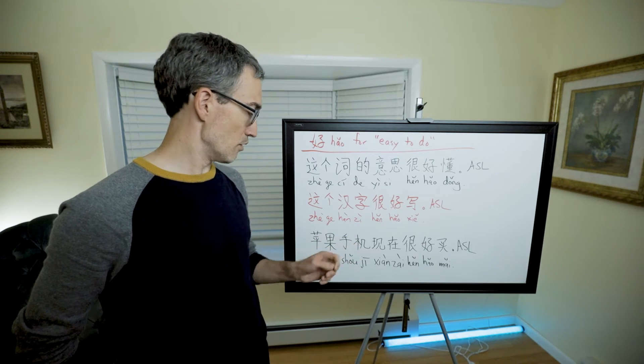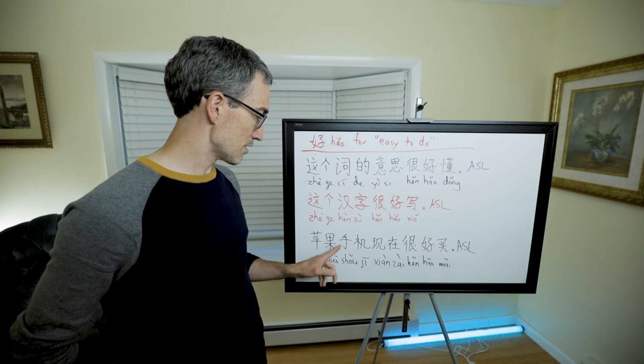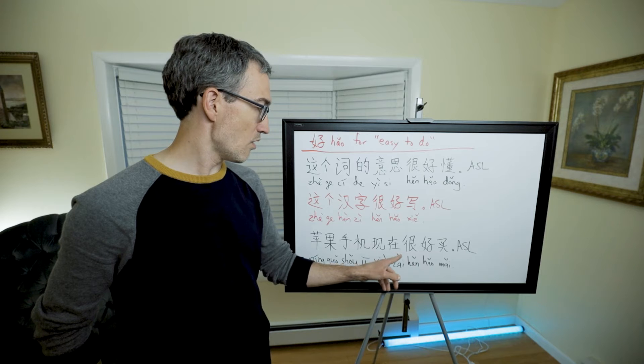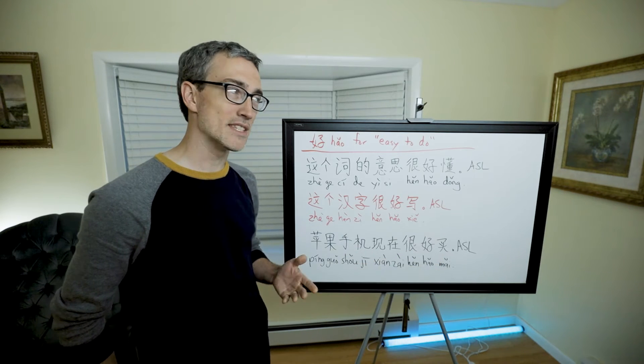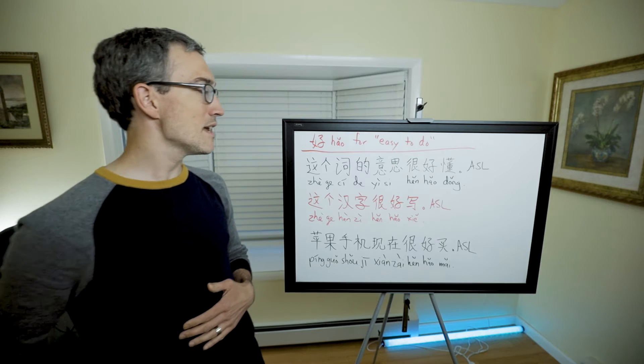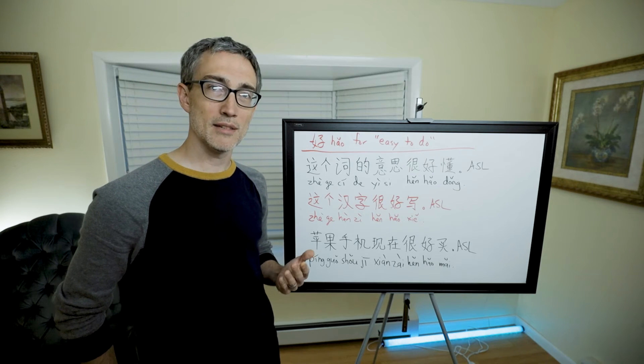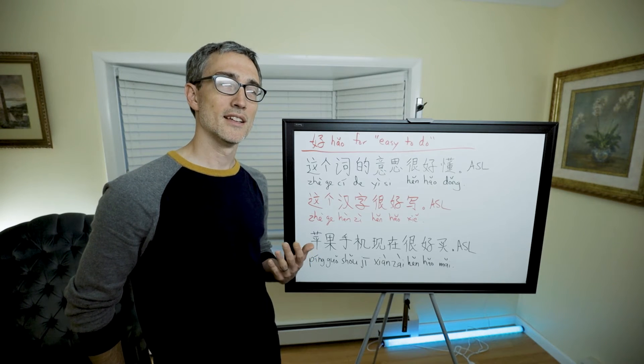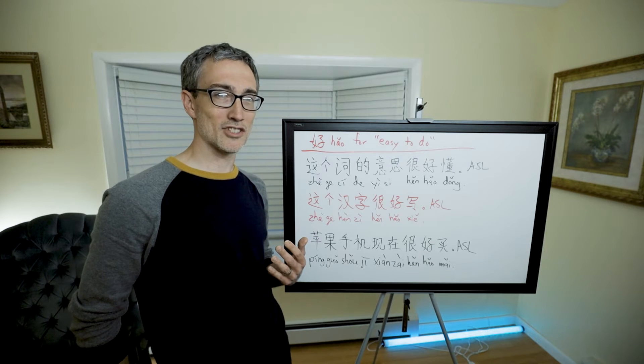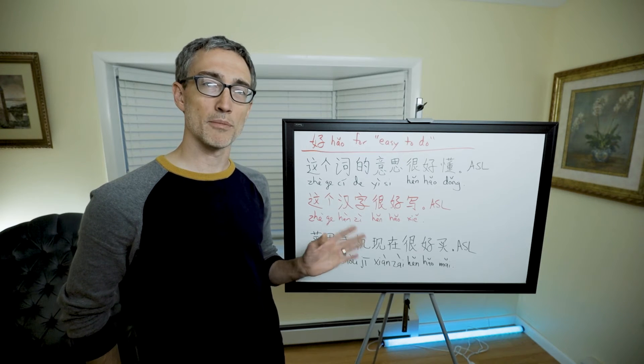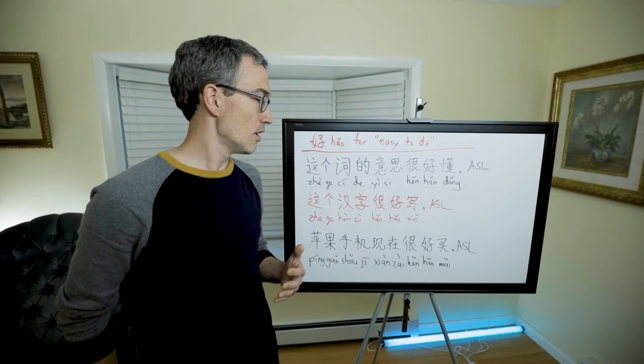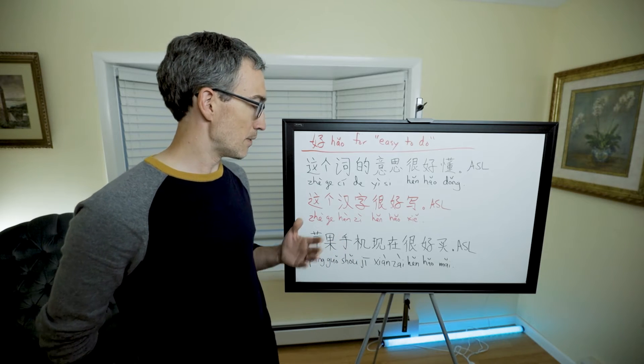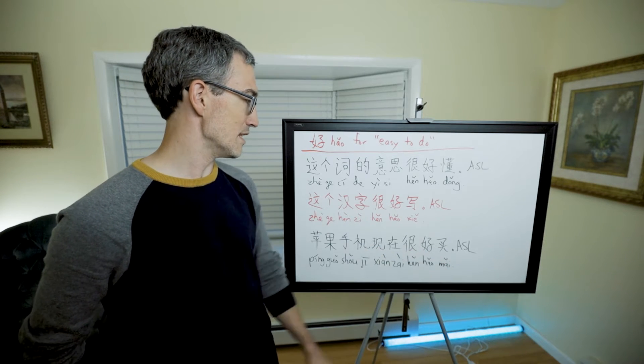苹果手机现在很好买. 苹果手机 means Apple cell phones, 现在 means now, 买 means to buy. So 很好买 means easy to buy. It could mean it's not difficult to find them, or it could be talking about the price. The point is that 好 plus verb means easy to do that verb.